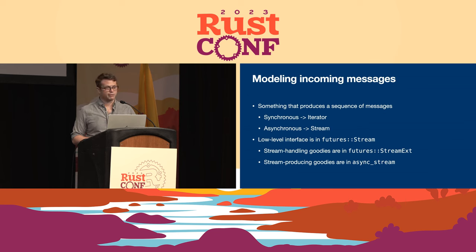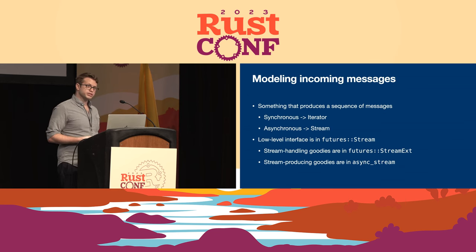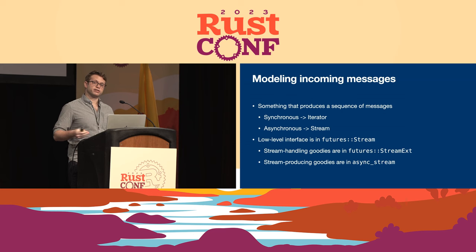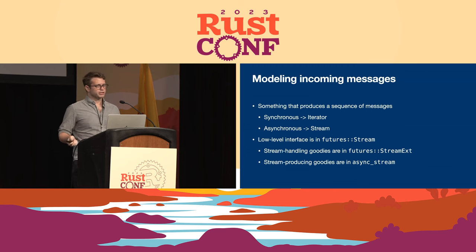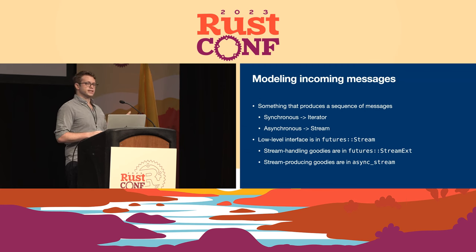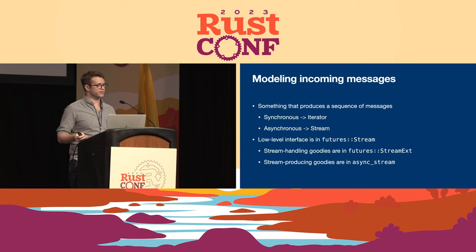Let's discuss how we model our incoming messages. In a synchronous world, you model a sequence of items with the iterator trait, which has combinators like take, skip while, and then. In the asynchronous world, you model this with a stream. My mental model for a stream is essentially an iterator that returns futures. The stream trait is the low-level interface — you won't use it much directly. All of those nice combinators are in a separate trait called StreamExt, or stream extension. There's also a crate called async-stream which provides macros that allow you to write imperative code to create a stream, essentially providing a yield keyword.